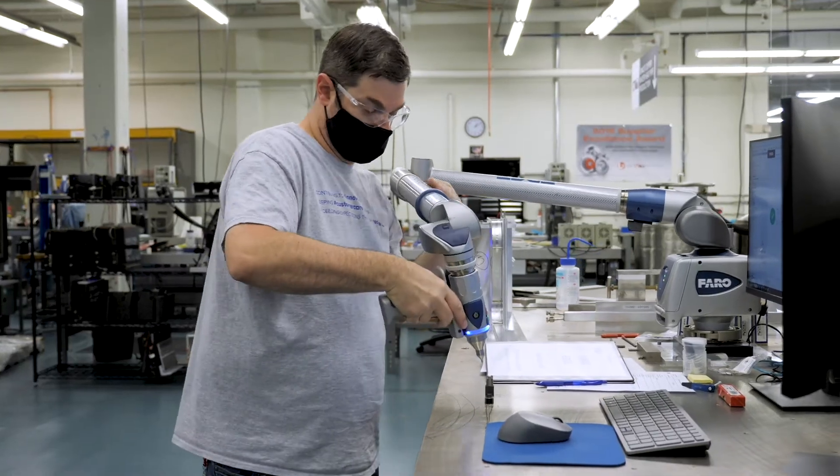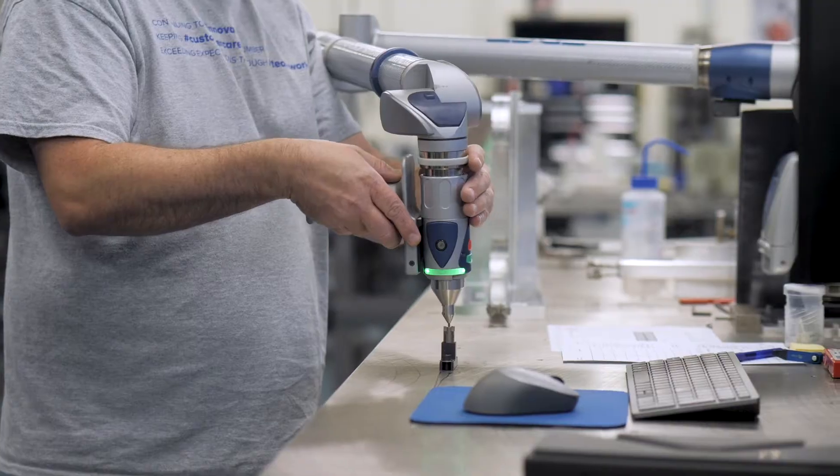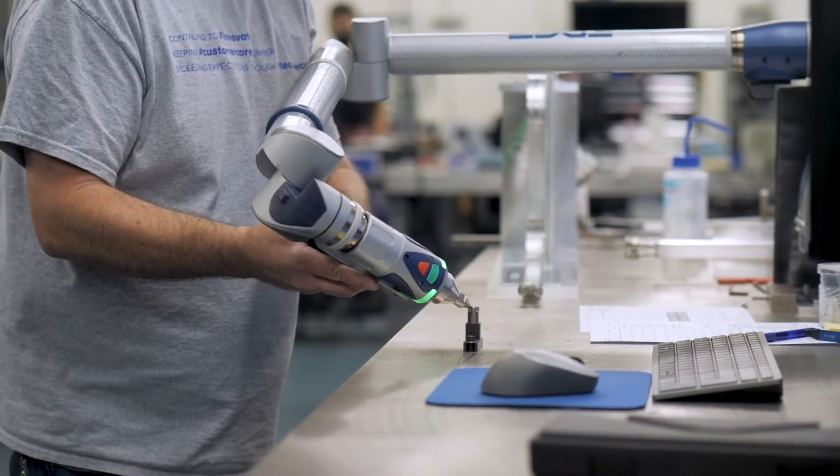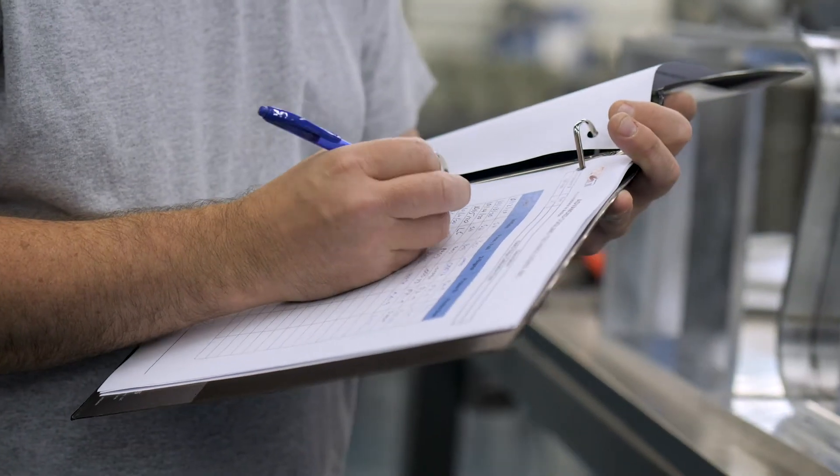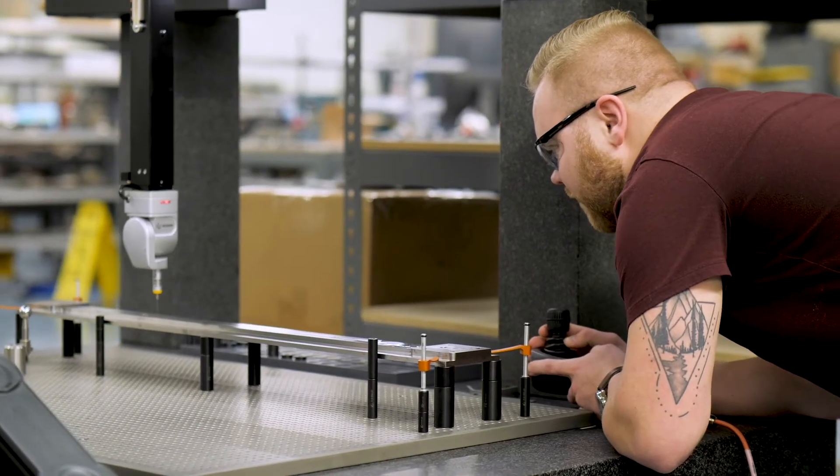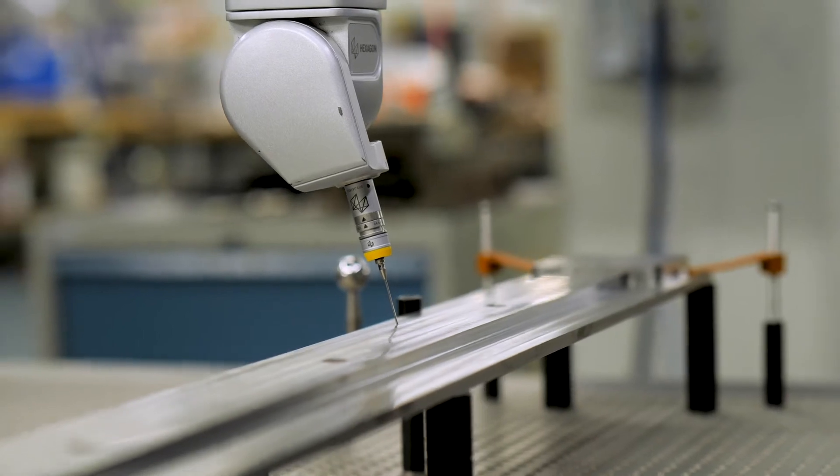We also have multiple inspection tools like eight-foot Faro arms to assure that all of our CCHPs are 100% dimensionally compliant with customer specifications.